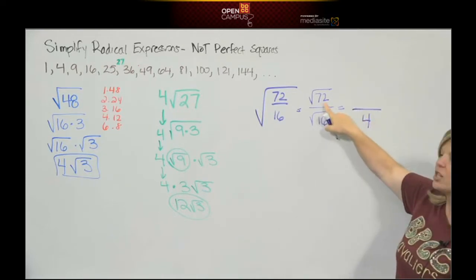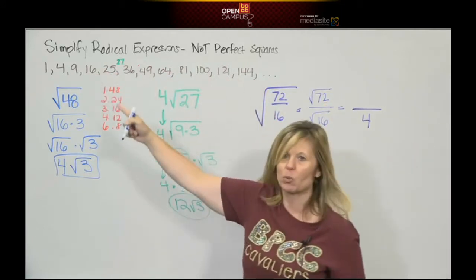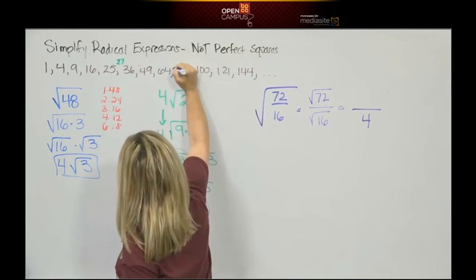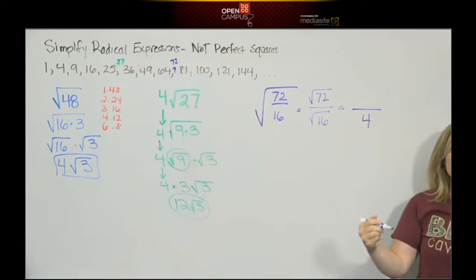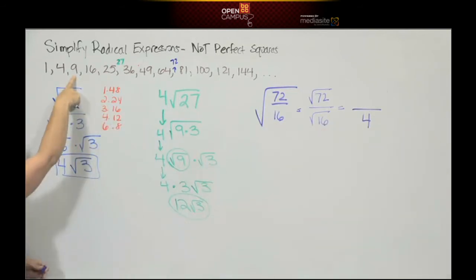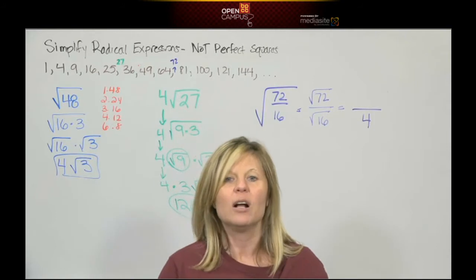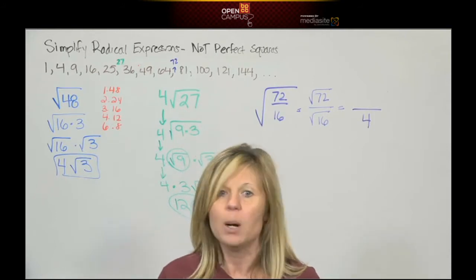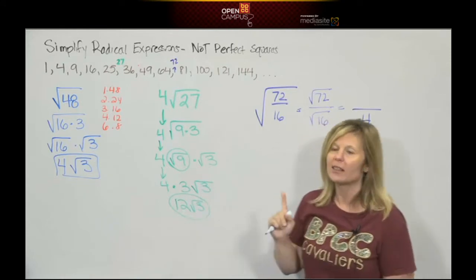The problem is 72. 72 is not on the perfect square list. 72 is located right here. We have to find the biggest perfect square in 72. Now I know what you're all thinking. It's 9. I know 9 times 8 is 72 from our multiplication tables. And that is correct. 9 is a perfect square that factors into 72. But it's not the biggest, and that's the goal, to find the biggest.